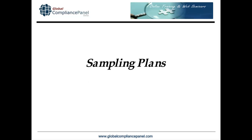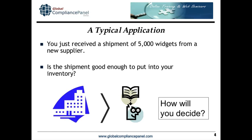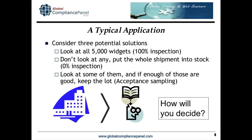So, sampling plans. Let's talk about this concept. Here's a typical application — not the only way to use sampling plans, but it illustrates the concepts and issues. You just received a shipment of 5,000 widgets from a new supplier, and you're faced with a question: is the shipment good enough to put into your inventory? You have a new supplier with not a lot of history, but they just went through the supplier qualification program, so you have every reason to believe they're going to ship you good material. You need some mechanism to decide whether or not you've got good stuff.